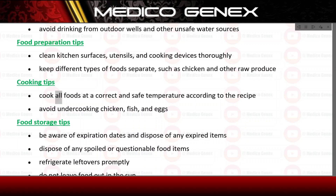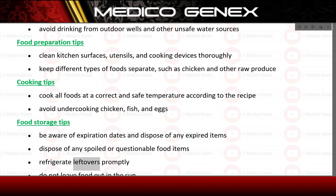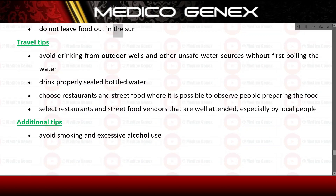Cooking tips: cook all foods at a correct and safe temperature according to the recipe. Avoid undercooking chicken, fish, and eggs. Food storage tips: be aware of expiration dates and dispose of any expired items. Dispose of any spoiled or questionable food items. Refrigerate leftovers promptly. Do not leave food out in the sun.